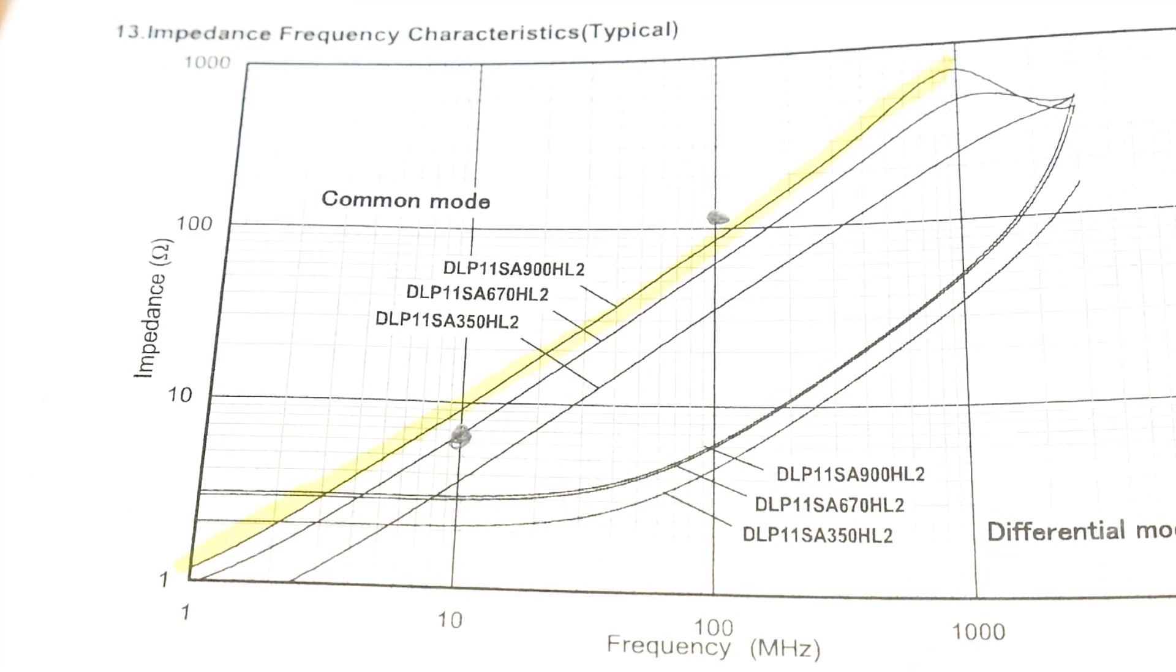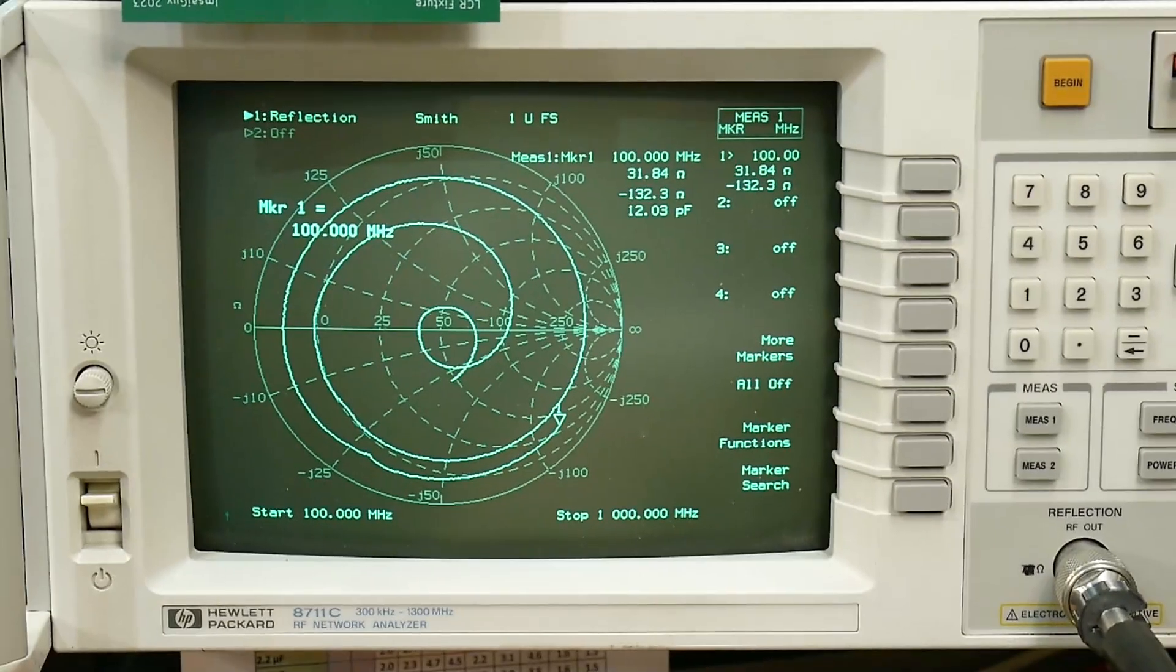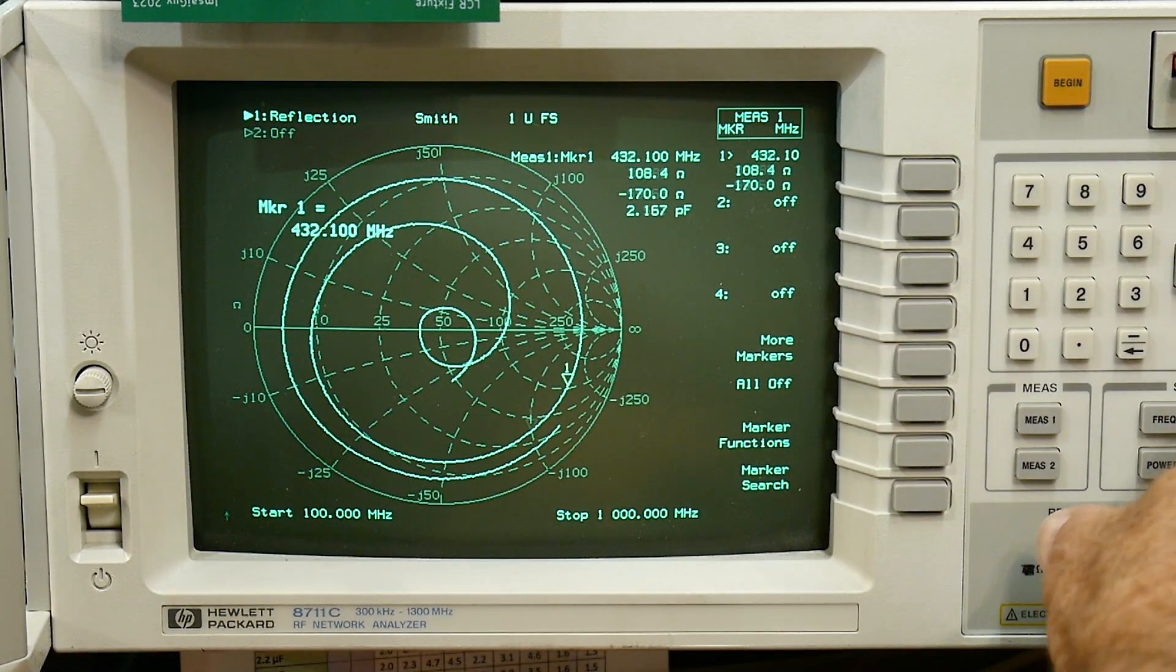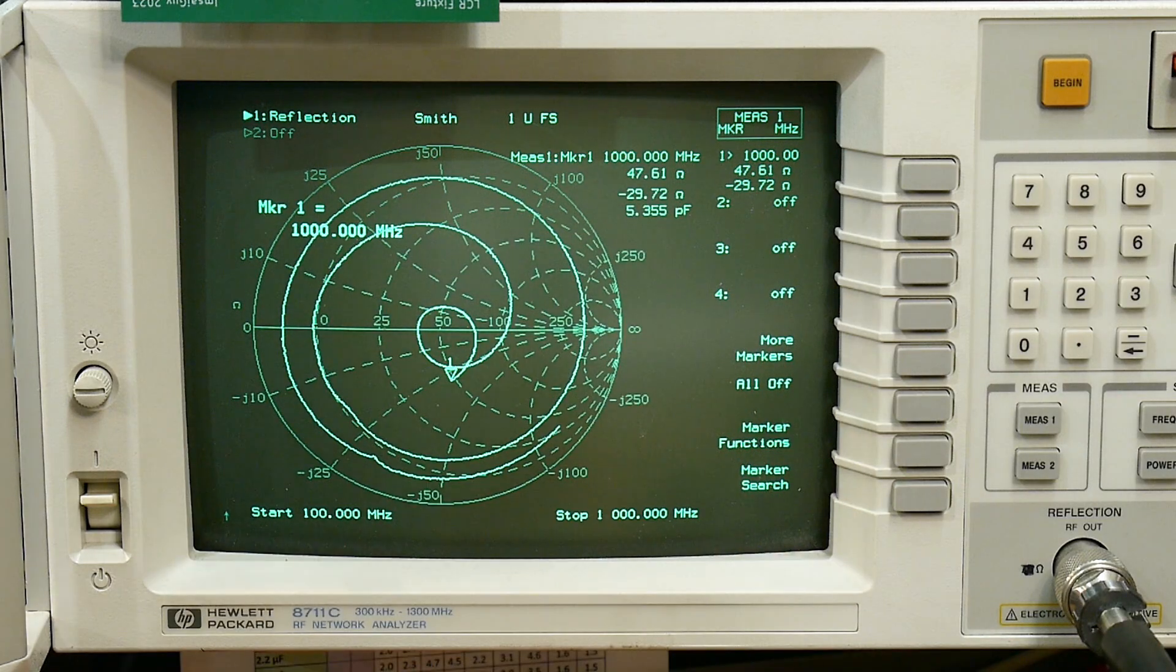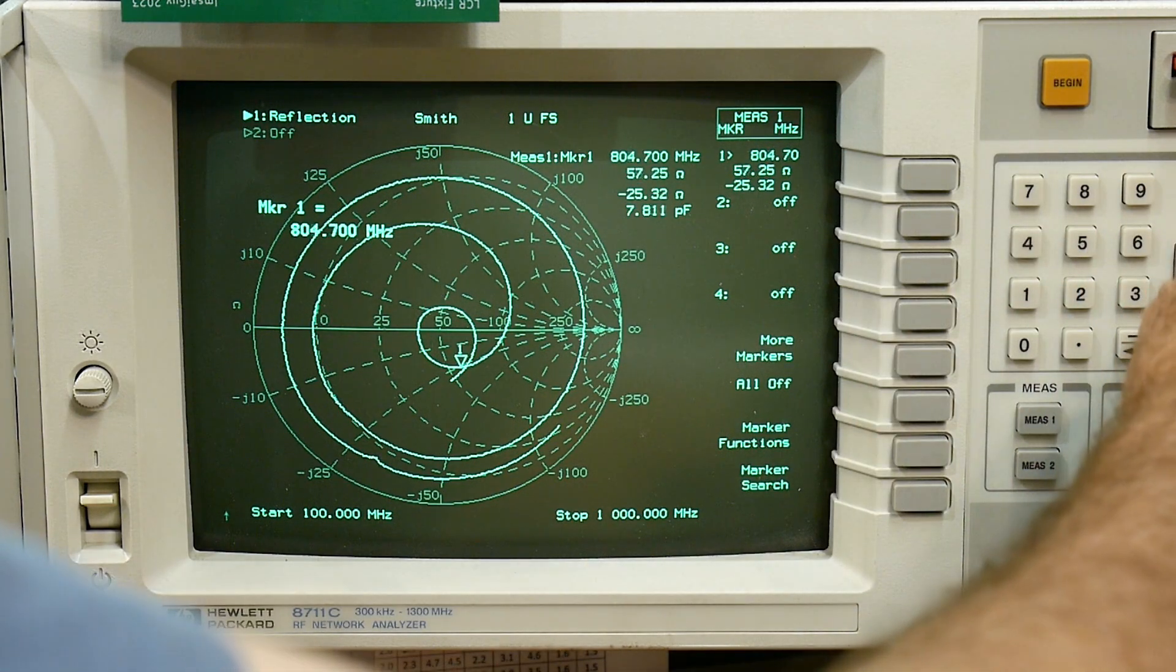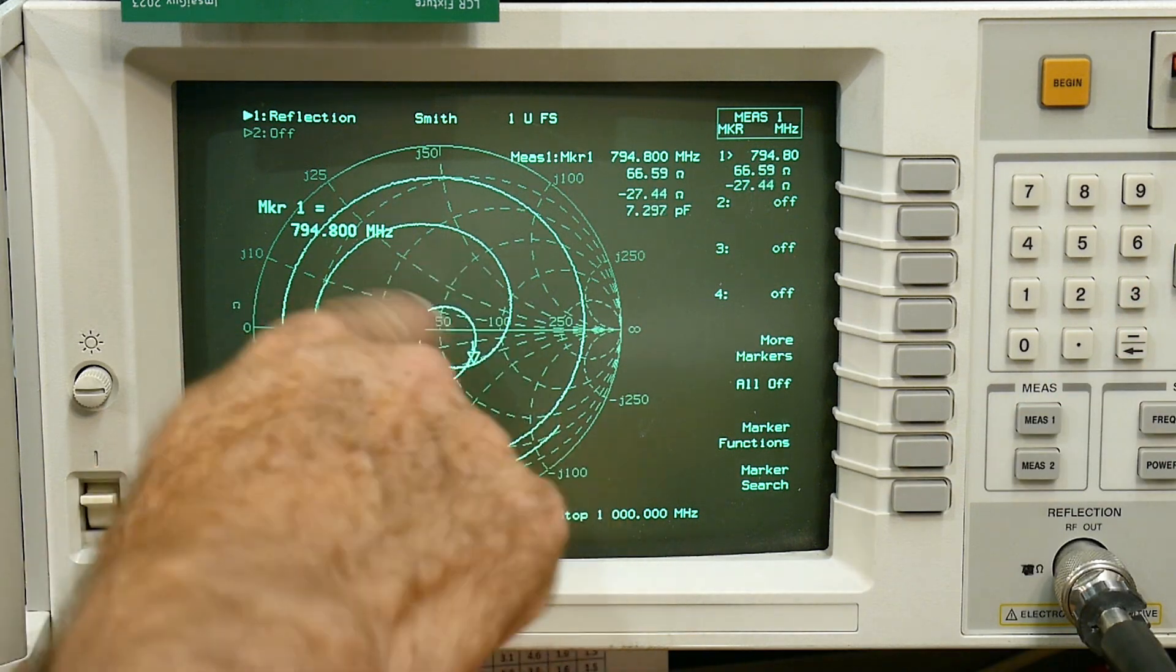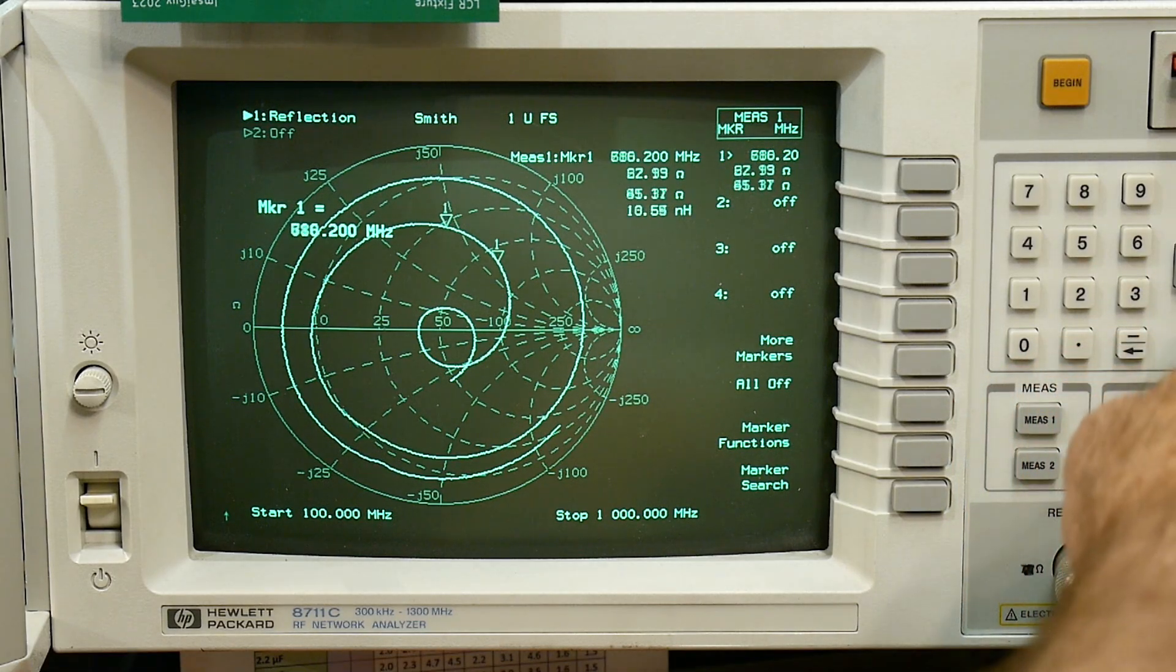Alright. Let's go ahead and see if we can run it up to a thousand here and see what we get. Alright. And we will change our marker to 1000 and we're about 48 ohms, 47 ohms. Alright. So sort of from above 800 megahertz, it's kind of spiraling the 50, 50 ohm part there. That's kind of fun.